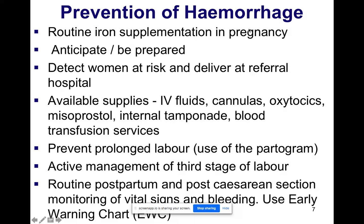With any management you always start with prevention. During pregnancy, it is very important to make sure all patients are on routine iron supplementation and to identify all patients at risk of obstetric hemorrhage — patients such as those with placenta previa or twin pregnancy. Those patients need to deliver at a referral hospital.